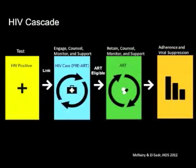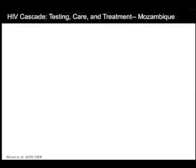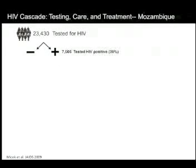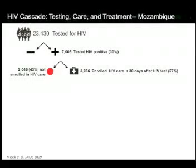Unfortunately, there are many leaks in the HIV cascade. This is the HIV cascade from Mozambique. In one example, 23,000 people were tested for HIV; 7,000 were found to be HIV positive — about 30% HIV prevalence. Of those, about half enrolled in HIV care within 30 days — a big leak right there. About 77% of those got a CD4 test, very important for staging and determining antiretroviral therapy eligibility.